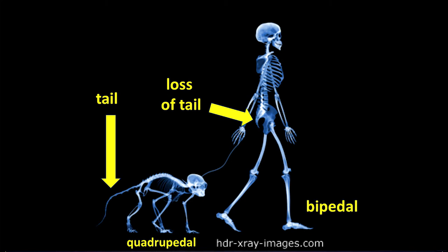And what about walking? You can see that the monkey is quadrupedal walking on all fours and this human being is walking on two feet called bipedal.